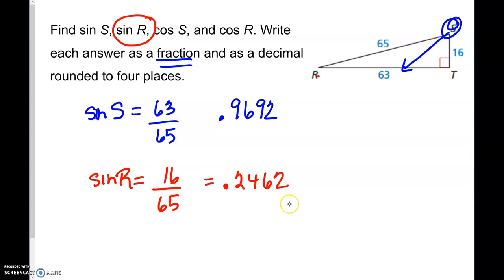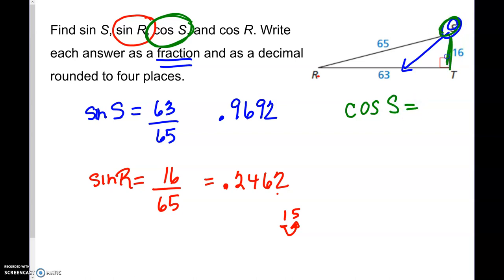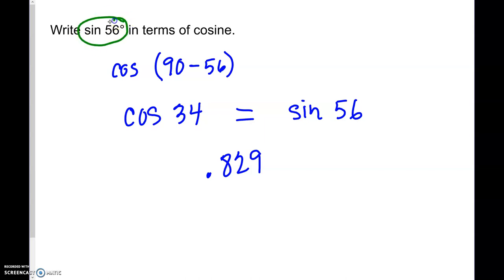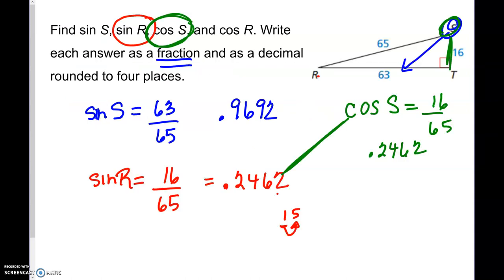For the cosine of S — cosine is adjacent over hypotenuse — that's 16 divided by 65, which is the same decimal: 0.2462. This confirms what we discussed: the sine of R and the cosine of S are the same values, just like sine of 56 equals cosine of 34 because they are complementary.